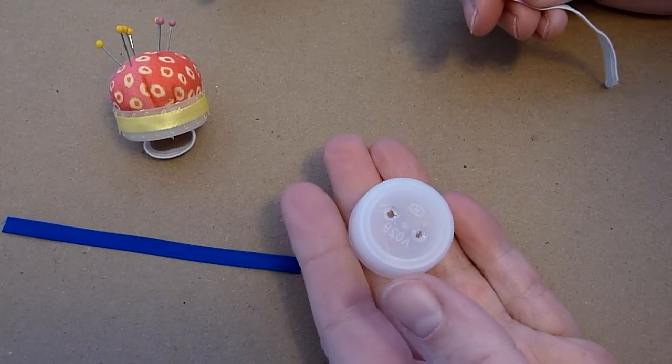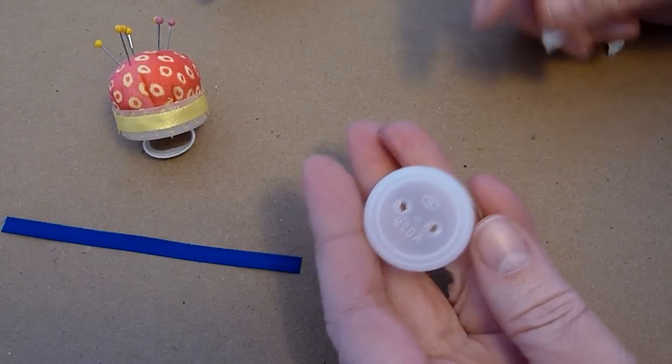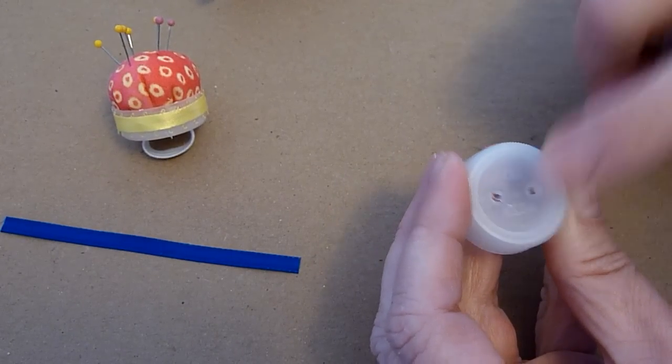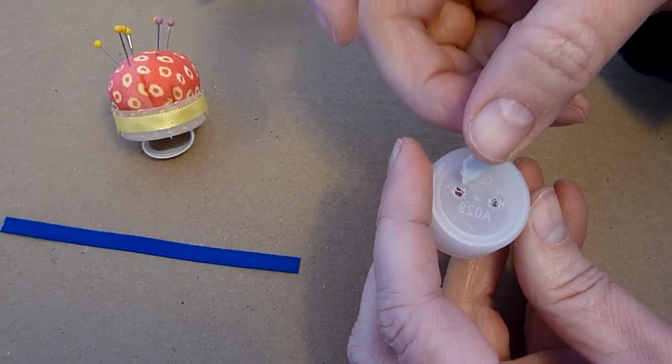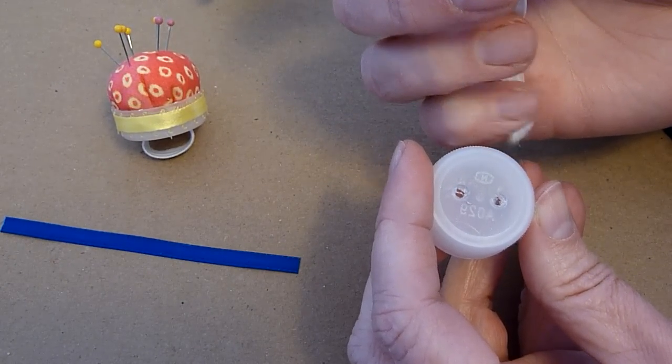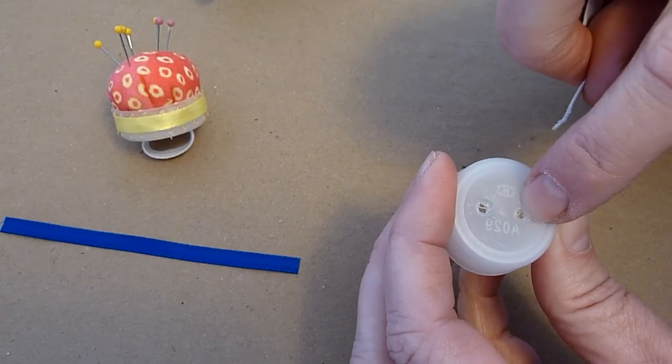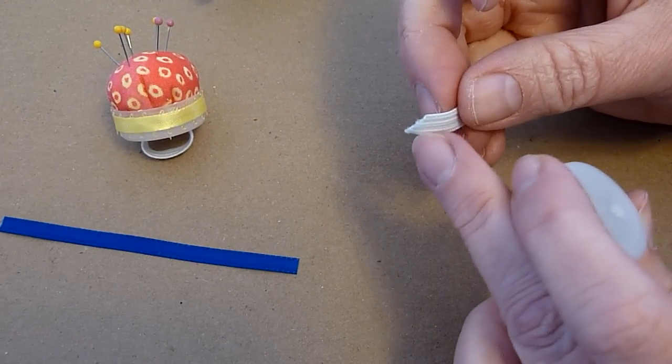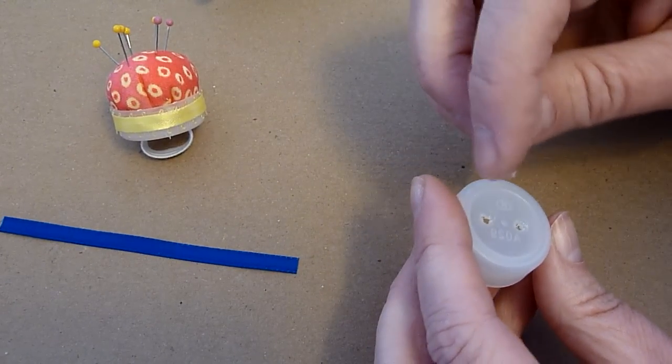What we want to do next is we want to feed our elastic through the holes. I'm working from the top of the bottle cap. I'm going to put one end of the elastic through this hole, and I'm going to put the other end of the elastic through this other hole here. If you cut your elastic at an angle, it makes it easier to go through the holes.